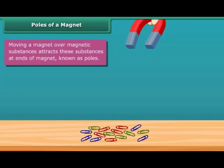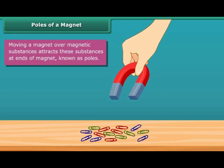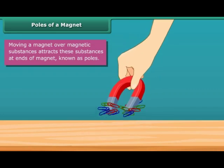When you move a magnet over magnetic substances, you will see that these substances get attracted to particular parts of the magnet only. These are generally the two ends of the magnet. These ends are called poles of the magnet.